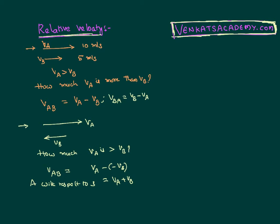So simple that if we are finding out the relative velocity of the two vectors in the same direction, we have to subtract. If they are in the opposite direction, we have to add. That is simple.